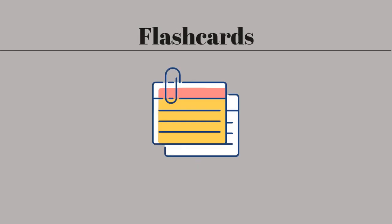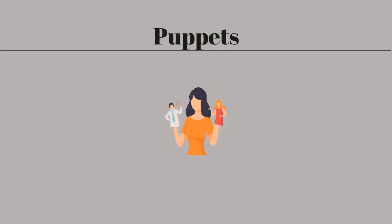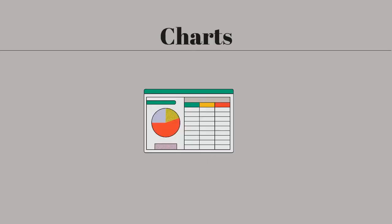Flashcards are versatile for teaching words or prompting grammar practice. Puppets are great for teaching young learners through puppet dialogues, and children can create their own. Charts are for displaying detailed images, phonemic symbols, diagrams, tables, and story sequences on classroom walls.